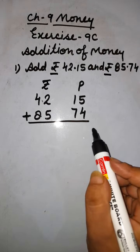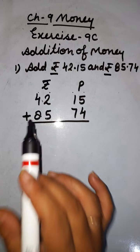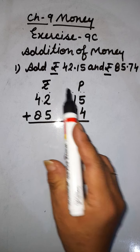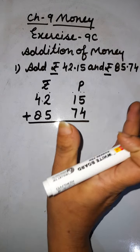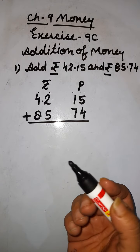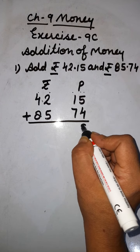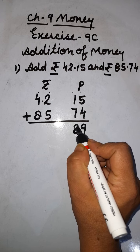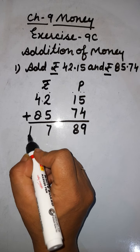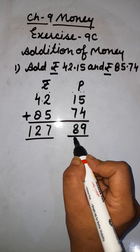This is the addition symbol. We will add starting from the ones column — ones, tens, hundreds, thousands. Remember: we always add numbers starting from the ones column, whether it is in the paise column or the rupees column. We start from the last digit. So: 5 plus 4 gives 9; 7 plus 1 gives 8; 5 plus 2 gives 7; and 8 plus 4 gives 12.